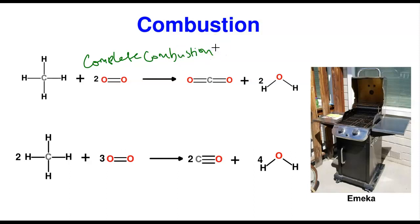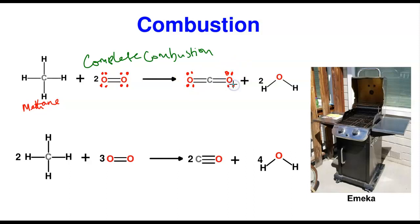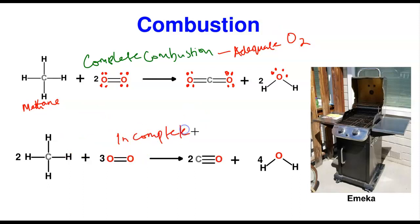Incomplete combustion is when you don't have enough oxygen, and it usually generates carbon monoxide and water. Carbon monoxide is a dangerous respiratory poison. Now looking at the reactions: the first is complete combustion — in complete combustion it generates carbon dioxide CO2 and water. In organic chemistry, I don't just want formulas; you need to write the structures. Methane (CH4) reacts with oxygen (O2) to form carbon dioxide and water. The equation is balanced. In the exam, I need the complete structure of the products and reactants.